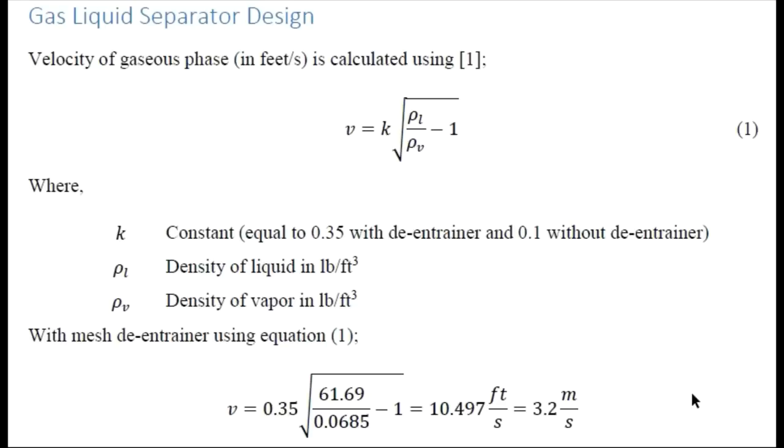However, some of the moisture content can be taken in the form of small droplets by the gas stream. So we provide a de-entrainer or mesh separator at the top which removes small droplets being carried by the gas with it.